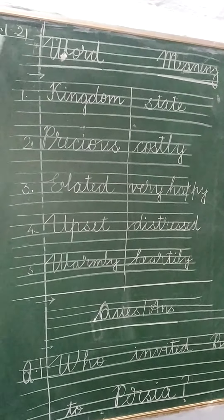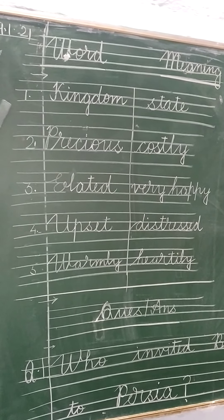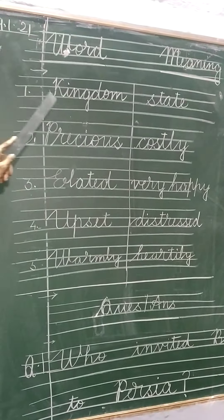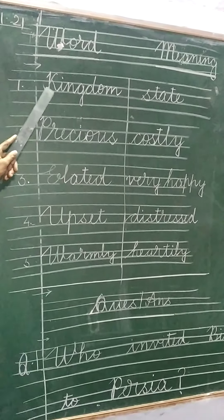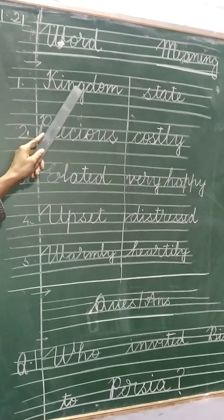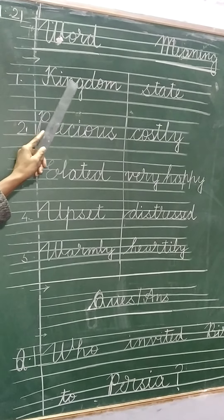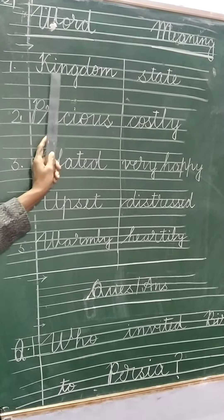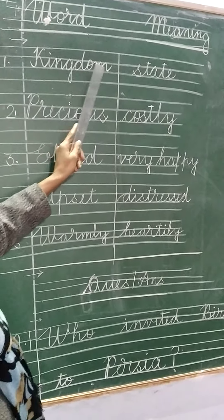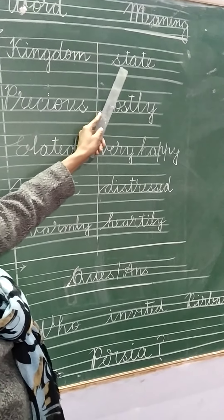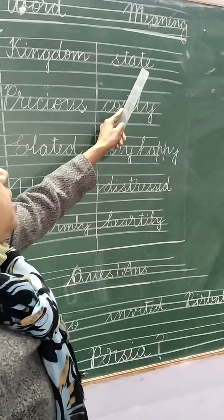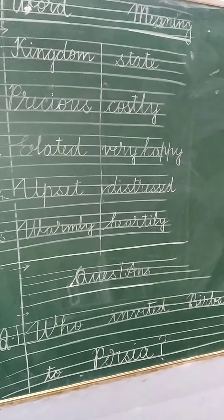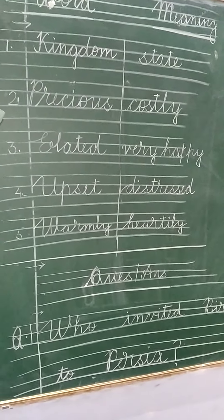Leave one line and write the first word. The first word is kingdom — K-I-N-G-D-O-M. Kingdom. The meaning of kingdom is state — S-T-A-T-E. State. Come to the next.